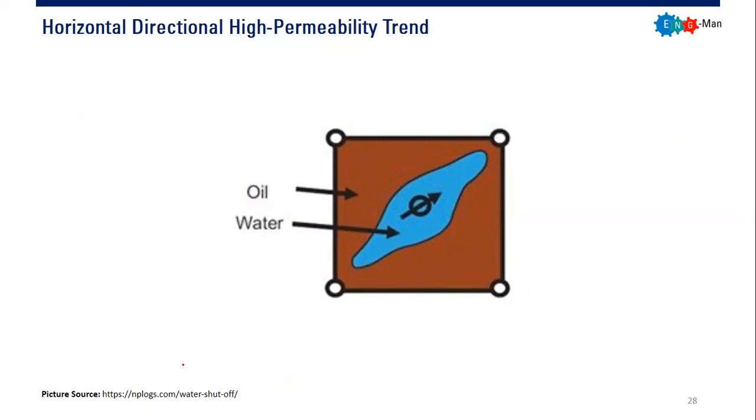If somehow you have high permeability trend in that direction, then of course if you inject water here, water will move faster across this direction. This can occur, for example, if you have this is the direction of the maximum horizontal stress.